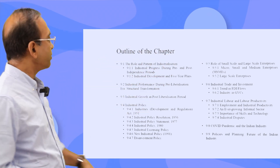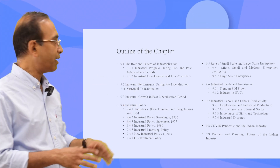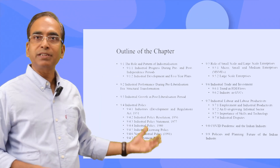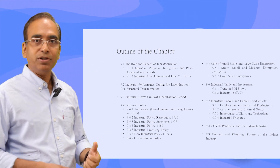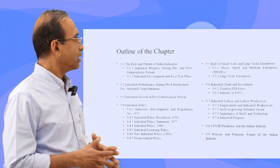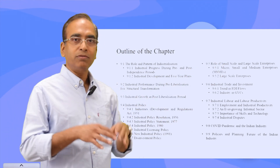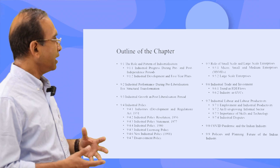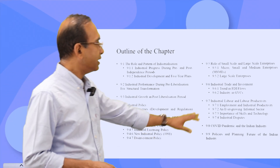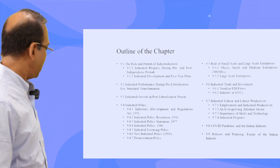The outline of the chapter is: we'll briefly touch upon the pre- and post-independence period, then industrial development through five-year plans, industrial performance pre- and post-liberalization, industrial policy series, small and medium-scale enterprises (MSME), industrial trade and investments including foreign direct investment and global value chain, labor and labor productivity, and finally we'll conclude talking about the COVID era and India's industrial development.